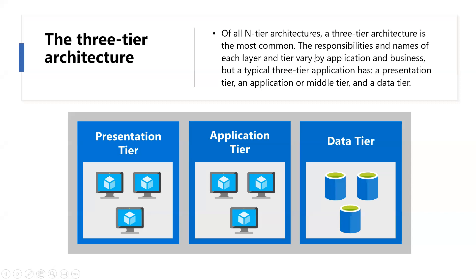Let's talk about sample scenarios when we can use a three-tier or N-tier architecture. Consider an N-tier architecture for simple web applications, migrating on-premises applications to Azure with minimal refactoring, and unified development of on-premises and cloud applications. Benefits include portability between cloud and on-premises and between cloud platforms, a natural evolution from the traditional application model, and openness to a heterogeneous environment.